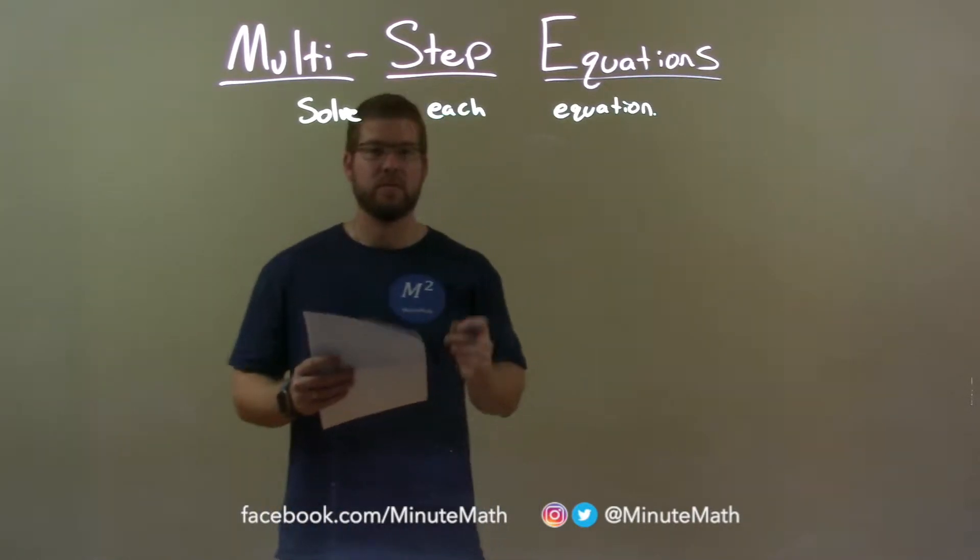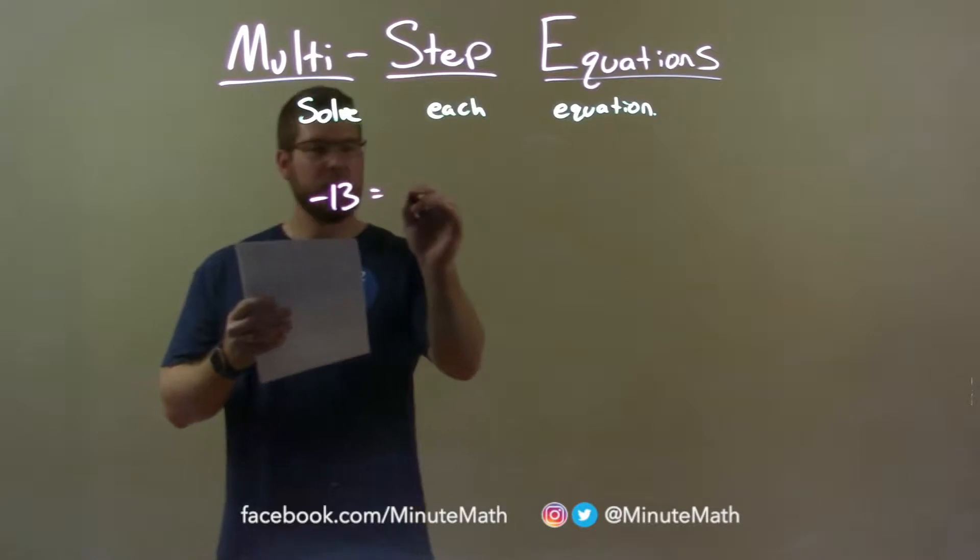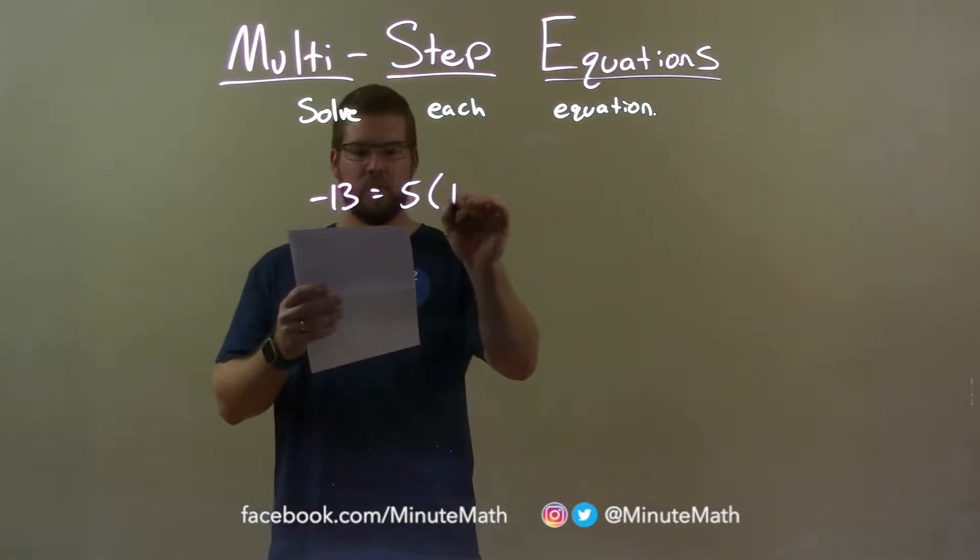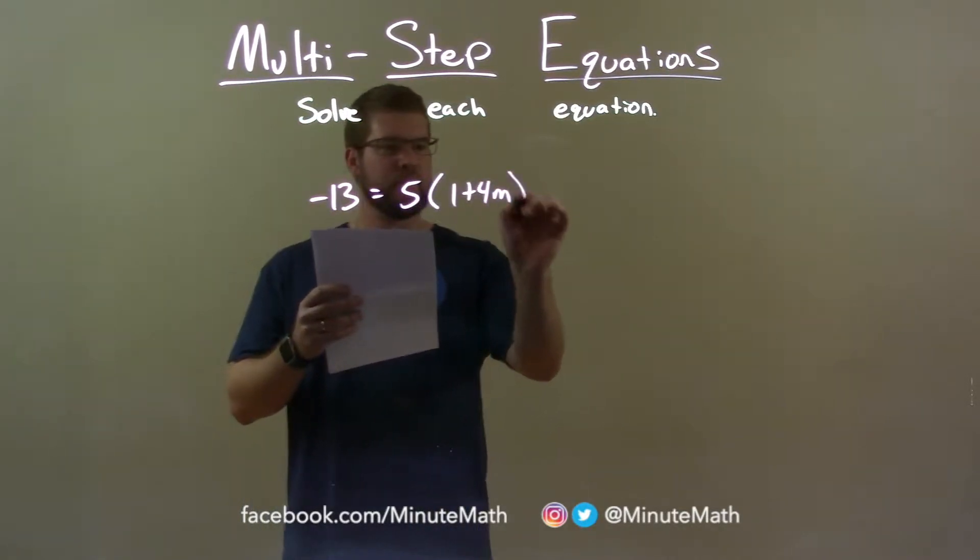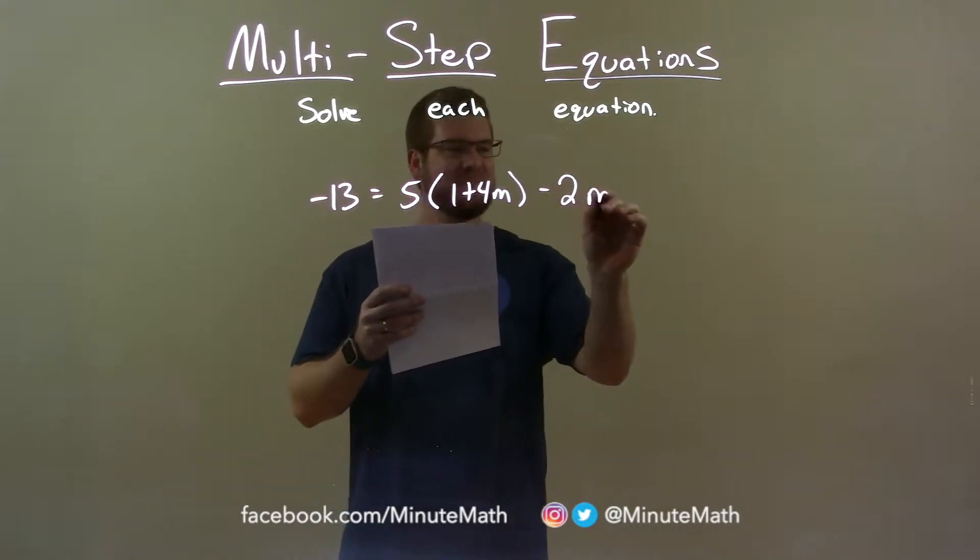Now, if I was given this equation, negative 13 equals 5 times 1 plus 4m minus 2m.